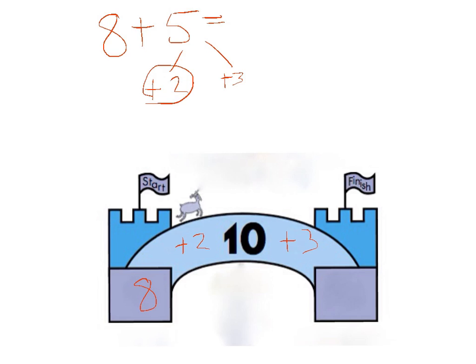And this strategy presumes that you will know what any one-digit number added to 10 will equal. So you'll need to know that 10 plus 6 is 16, 10 plus 7 is 17, 10 plus 4 is 14. And you can simply look at 10 plus 3 and go to 13.